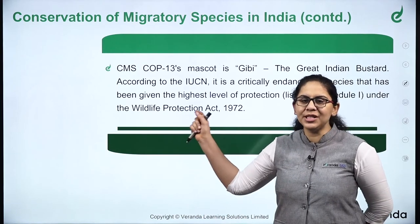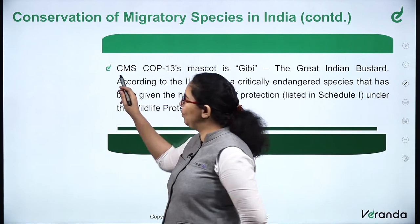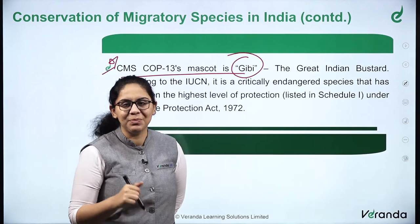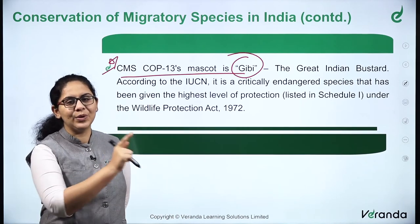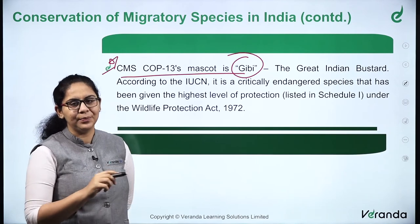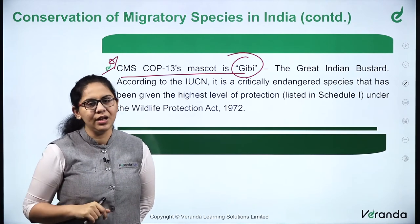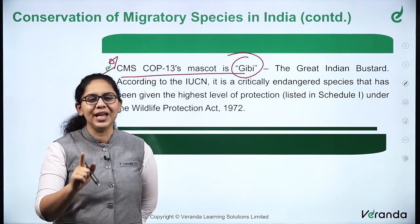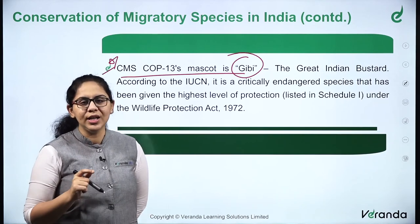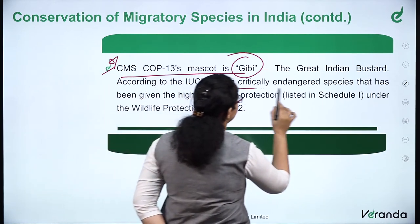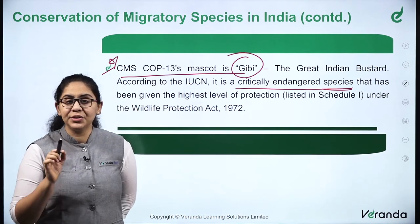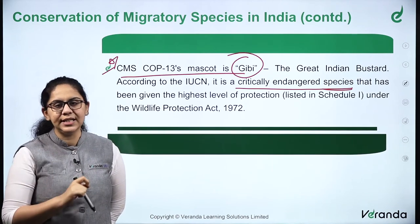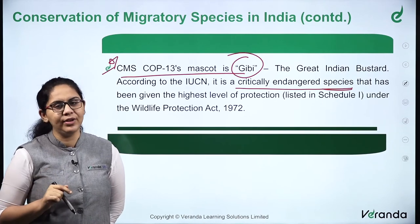The mascot of CMS COP13 was Gibi — the Great Indian Bustard. The Great Indian Bustard was also frequently in the news. According to IUCN, it is critically endangered. Its IUCN status is therefore very important. The Great Indian Bustard is a critically endangered species that has been given the highest level of protection, listed in Schedule 1 under the Wildlife Protection Act of 1972.